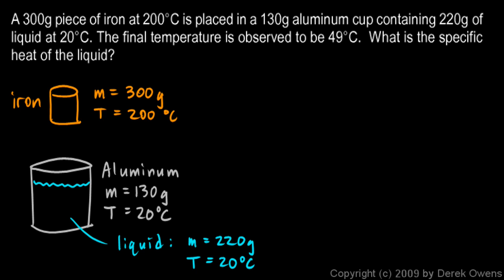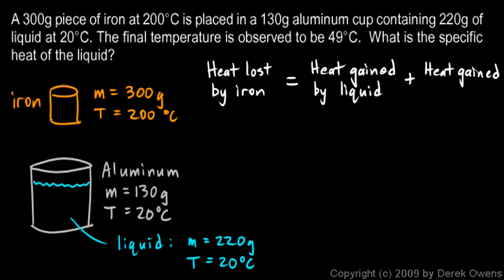We set this up as conservation of energy. Think about what the heat is doing, where it's going, and realize that any heat that's leaving one thing has to go into other things. In this case, the heat is leaving the iron, and it's going into the aluminum and the liquid. So we set it up like this. We say the heat lost by the iron will equal the heat gained by the liquid plus the heat gained by the aluminum. So this is essentially a statement of the law of conservation of energy applied to this particular situation.